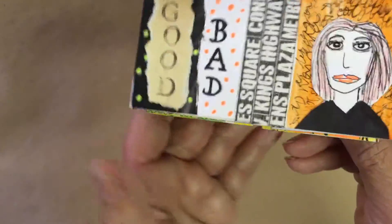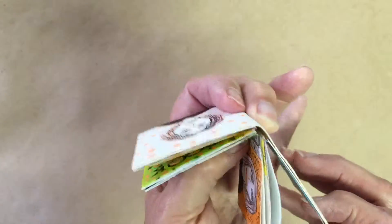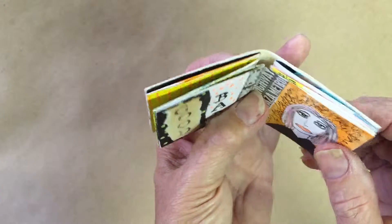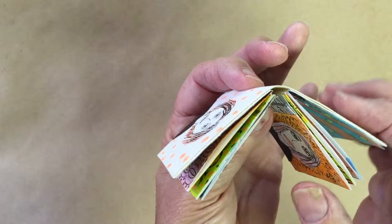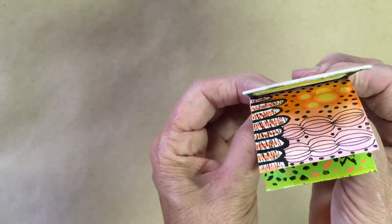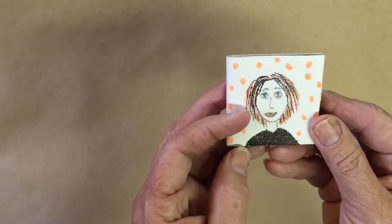Now ordinarily when I do a book I attach all the pages. I sew them, but I think what I'm gonna do on this one is I'm only gonna sew this middle one because I think that's gonna hold it in place.